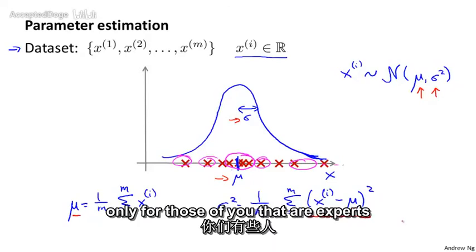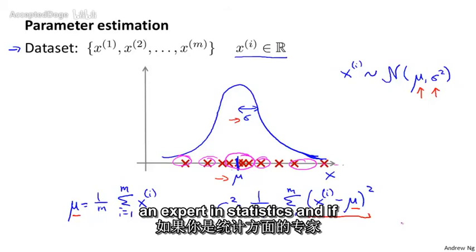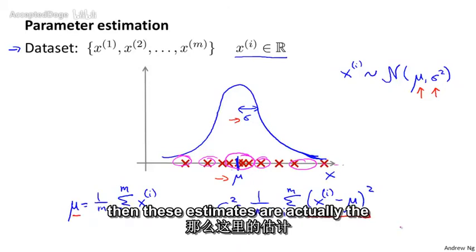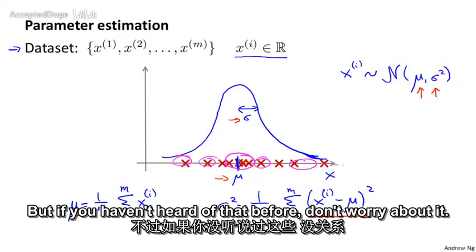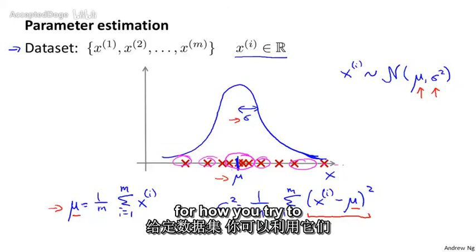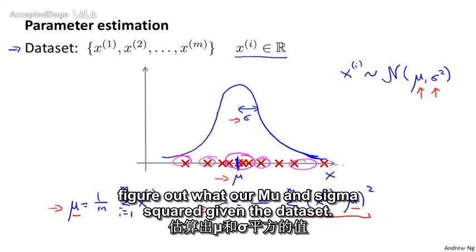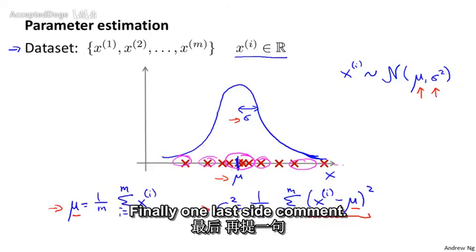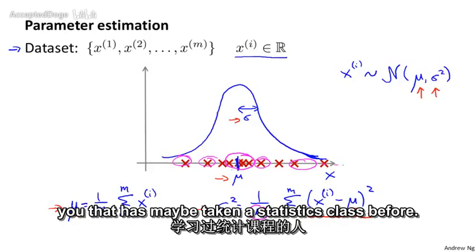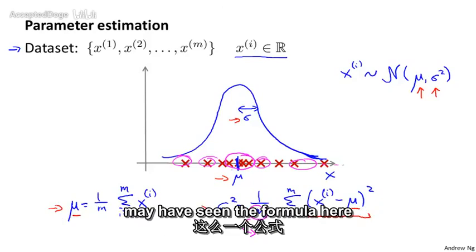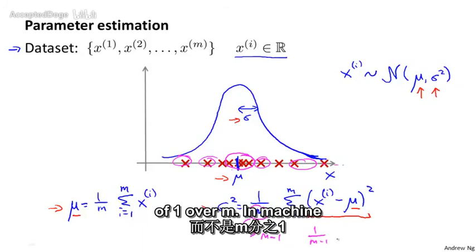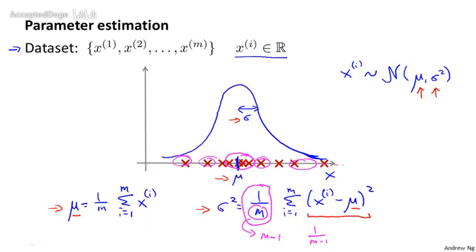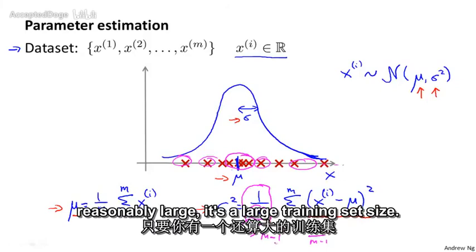As a side comment only for those familiar with statistics: if you've heard of maximum likelihood estimation, these are actually the maximum likelihood estimates of mu and sigma squared. Also, some statistics classes use m minus 1 instead of m in the denominator — so the first term becomes 1 over m minus 1. In machine learning, people tend to use 1 over m, and in practice it makes essentially no difference assuming a reasonably large training set size.